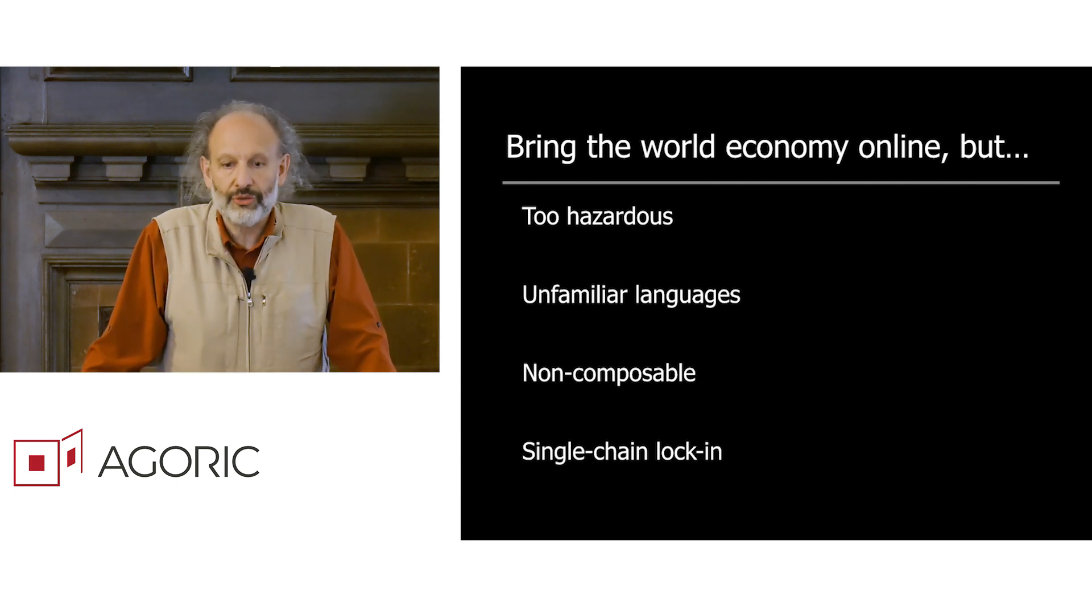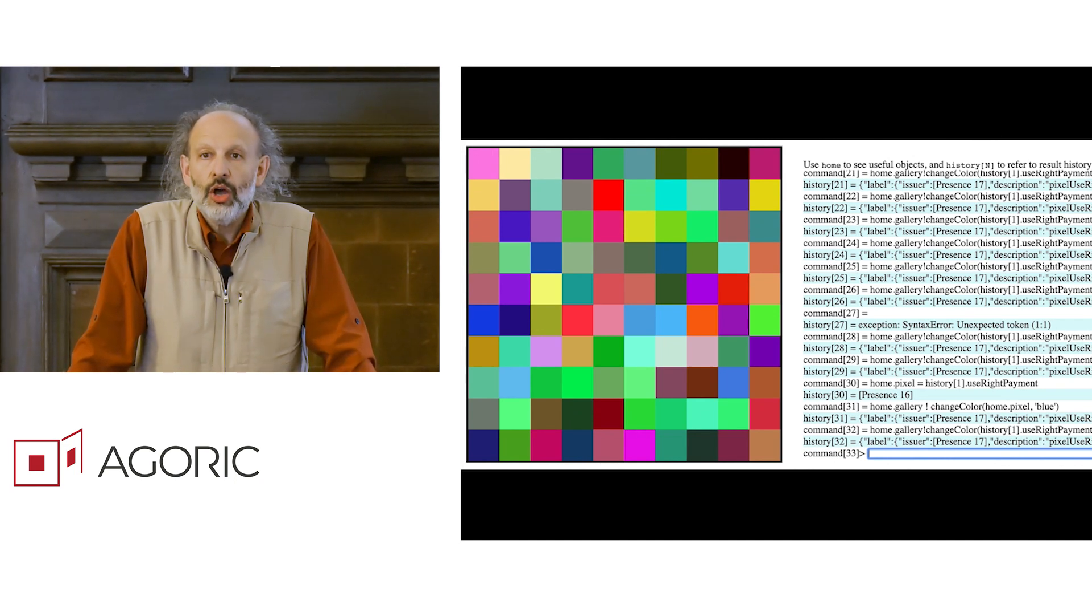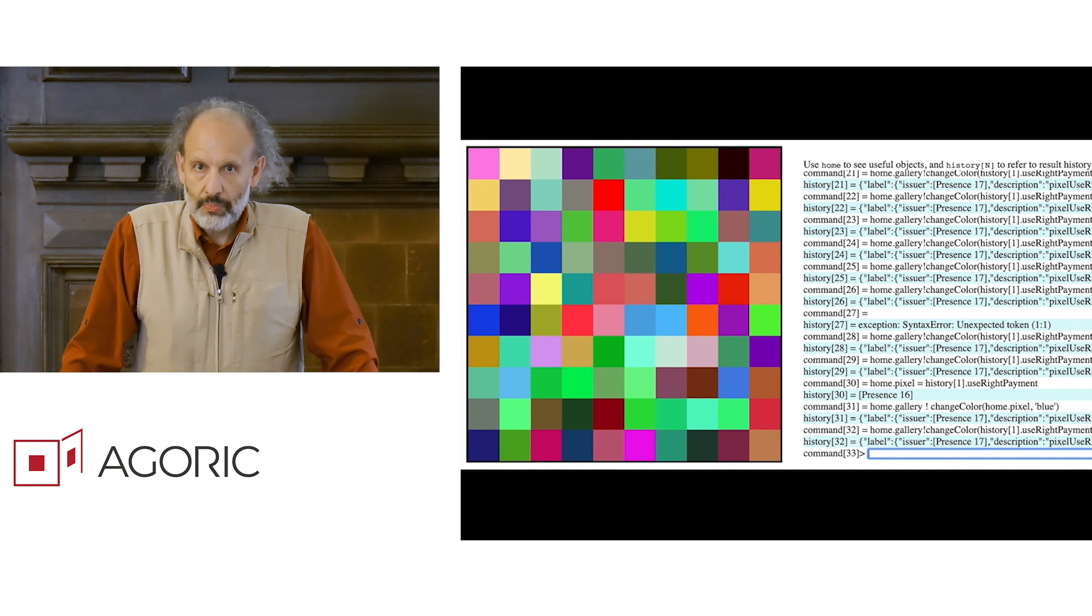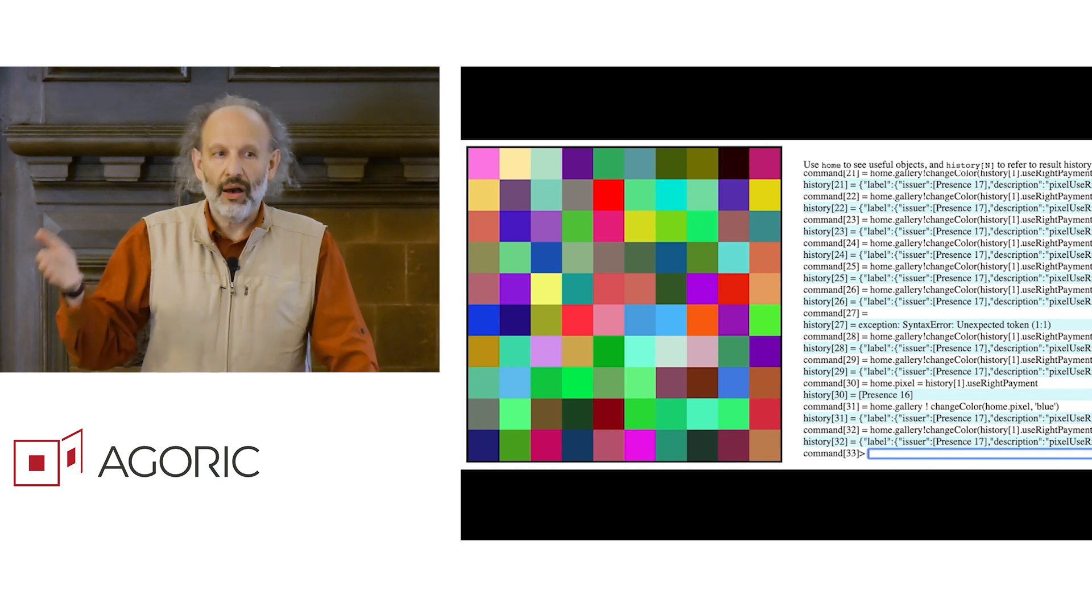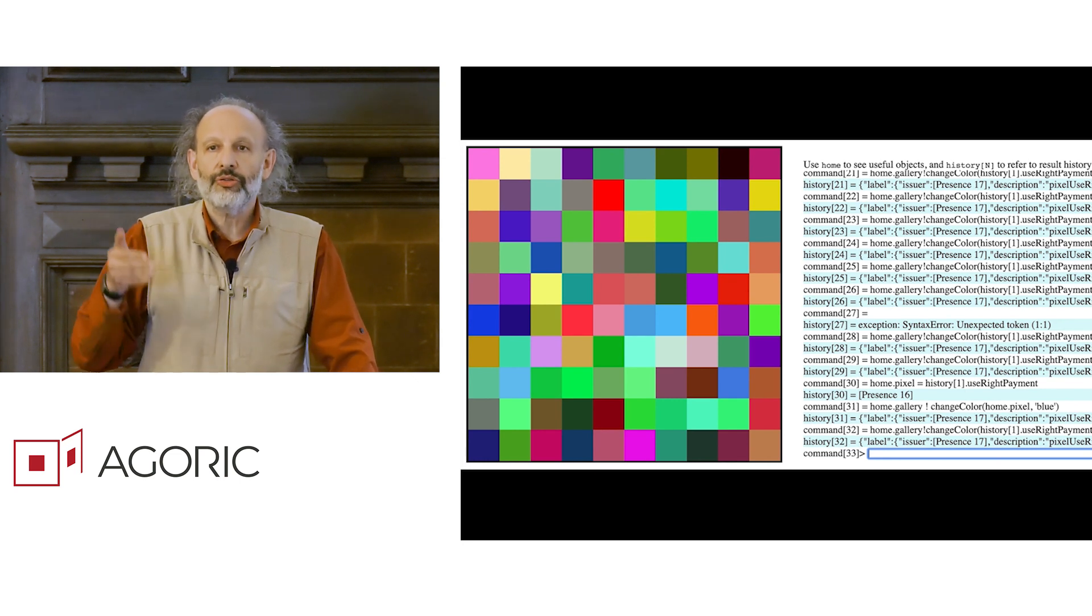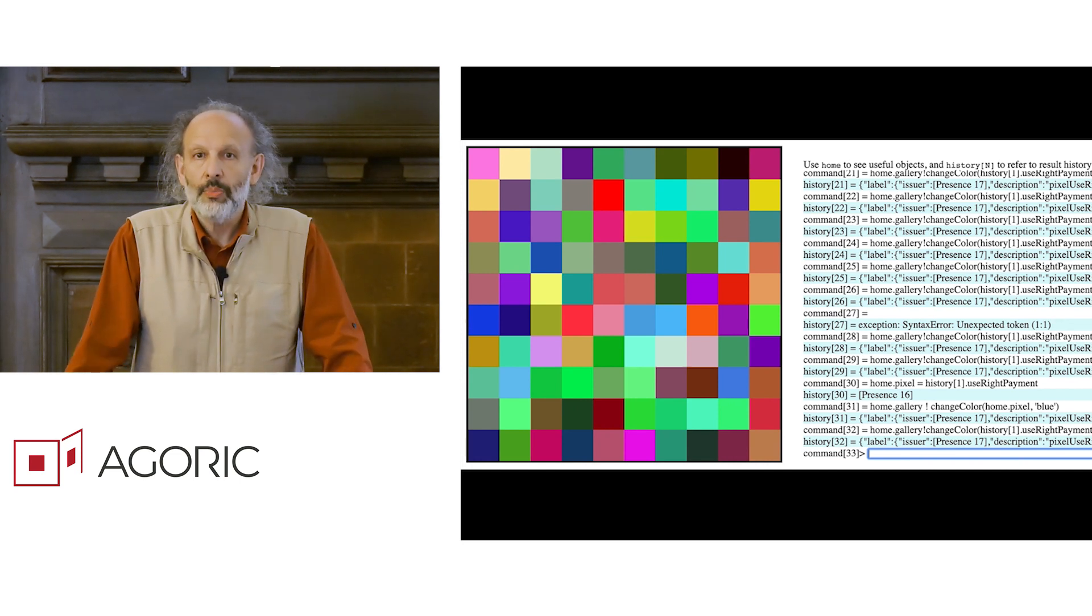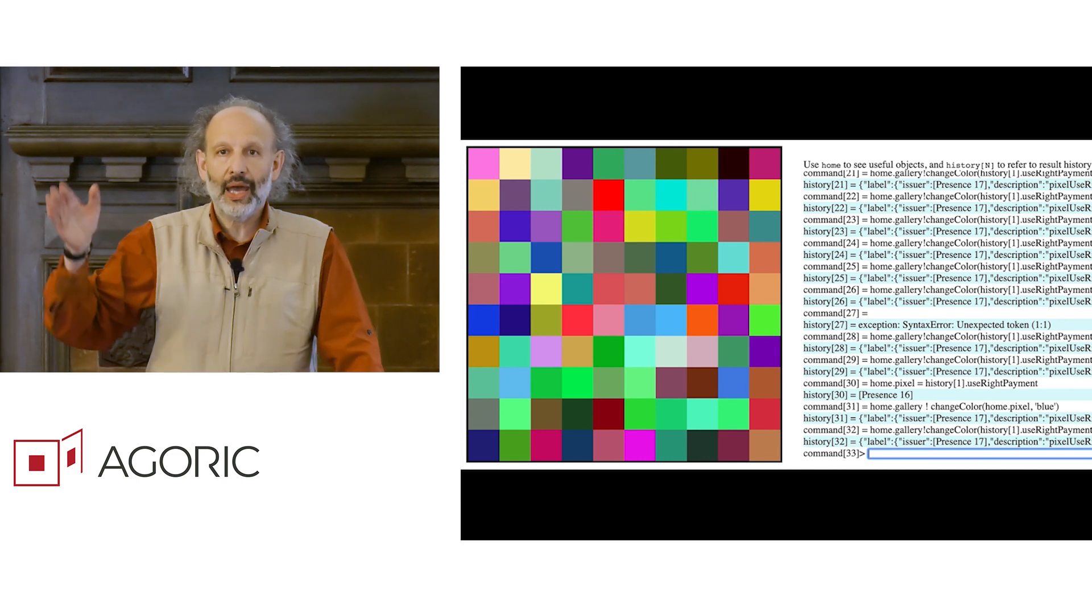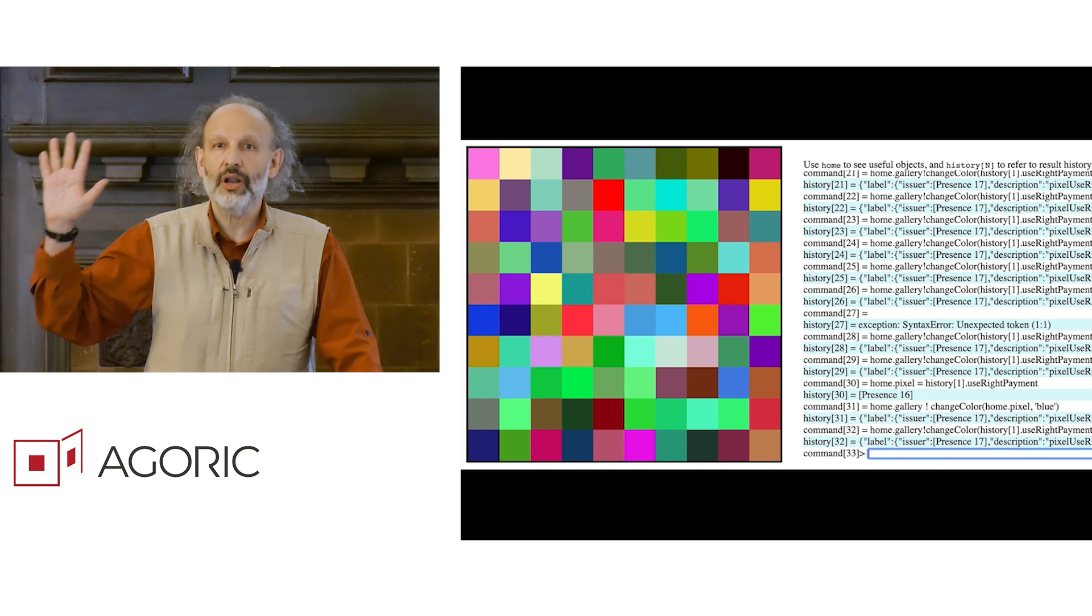So we're setting out to address these problems. Agoric is currently at TestNet. What TestNet means is that our system is working end to end well enough that people can start using it in a realistic way, but not with real assets at stake. Do not risk real assets at stake on the system as it is now, but you can write contracts, you can play with the security properties, and the system is working end to end, including our software running on a genuine blockchain up at servers that are not in our house.